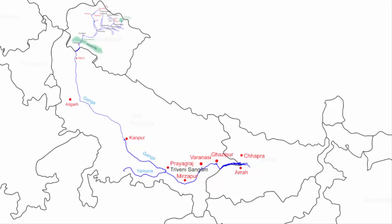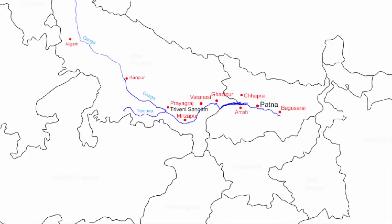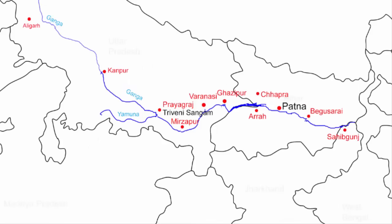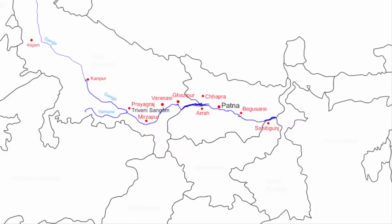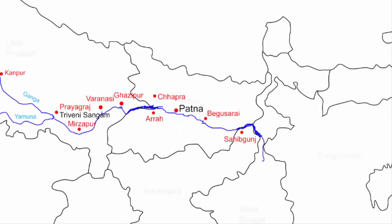The river flows through the capital city of Patna, then Begusarai, and finally reaches the extreme eastern part of the Bihar and Jharkhand border. Ganga enters Jharkhand from the Sahibganj district. In Jharkhand it flows along the northeastern border for about 70 to 75 kilometers.